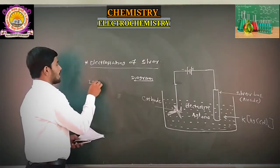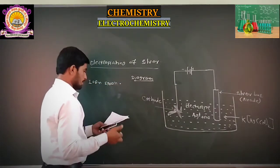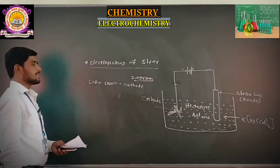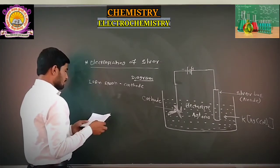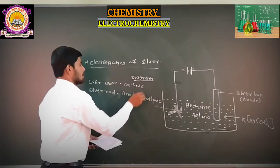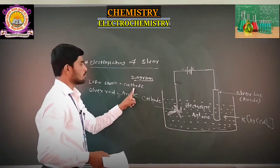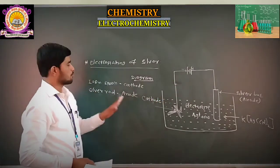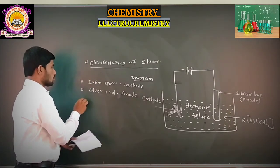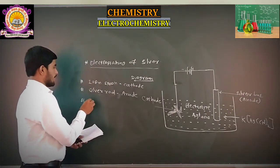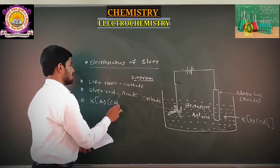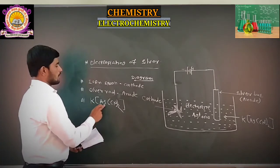The iron spoon is used as the cathode. Whatever article we are going to plate, that article will be used as the cathode. Whatever silver rod is present is used as the anode. The electrolyte solution used is potassium argentum cyanide — KAg(CN)₂.